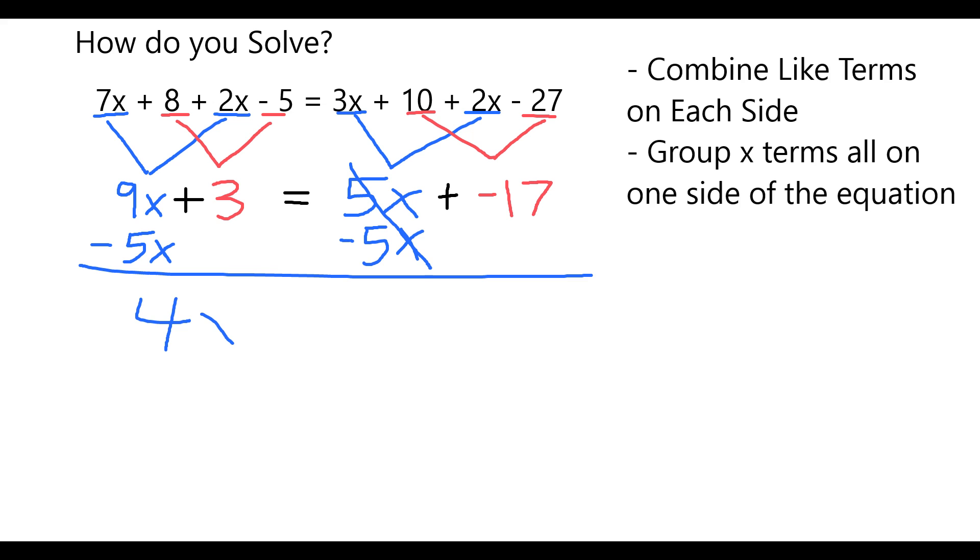On the right, my 5x and negative 5x cancel, and on the left, I'm left with simply 4x.